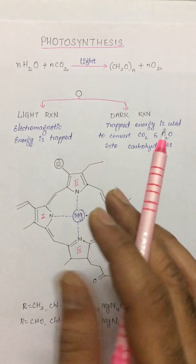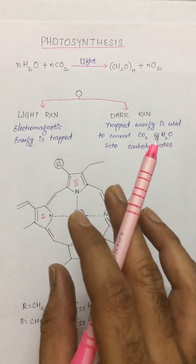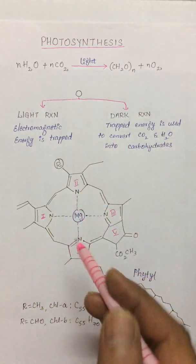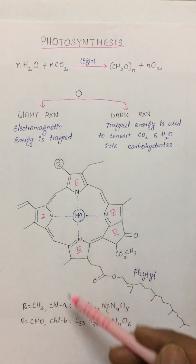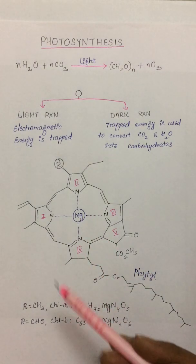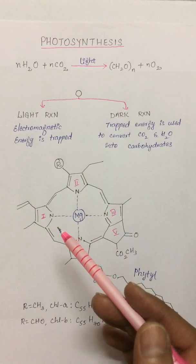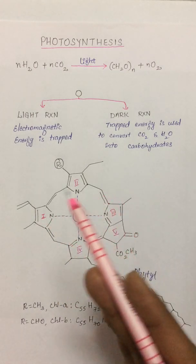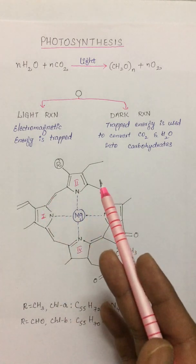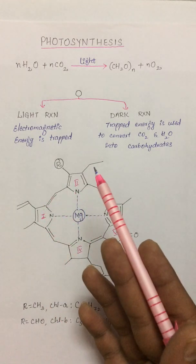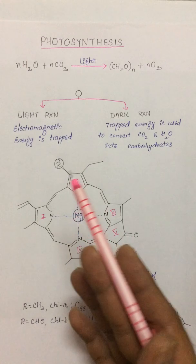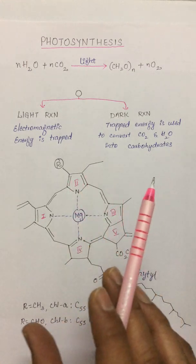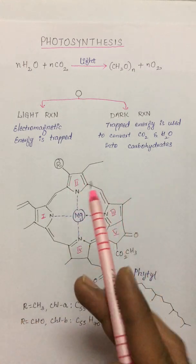This process of electromagnetic energy trapping occurs in special pigments called chlorophylls that are present in chloroplasts. There are two different types of chlorophylls: chlorophyll a and chlorophyll b. These chlorophylls can strongly absorb in blue and red portions of the light. Since they strongly absorb in blue and red, they reflect green color, or since they do not absorb in the green region, they reflect green.